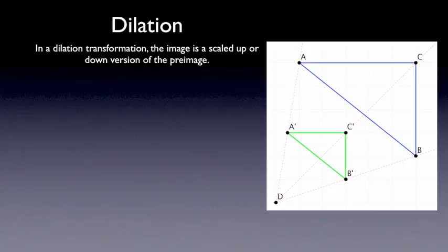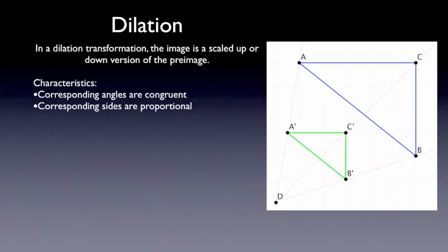In the figure shown, ABCD is the pre-image, and it is reduced or scaled down to A', B', C'. So every dilation has corresponding angles congruent, the corresponding sides will be proportional, and you must have a center of dilation and a scale factor.